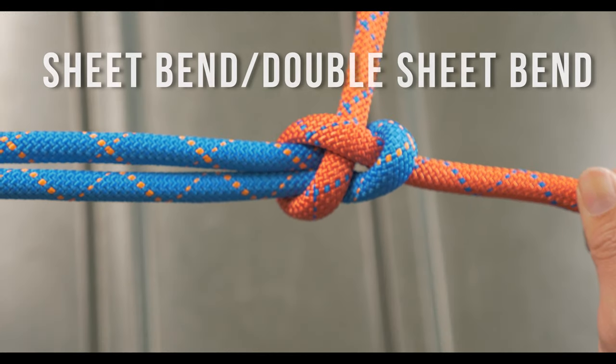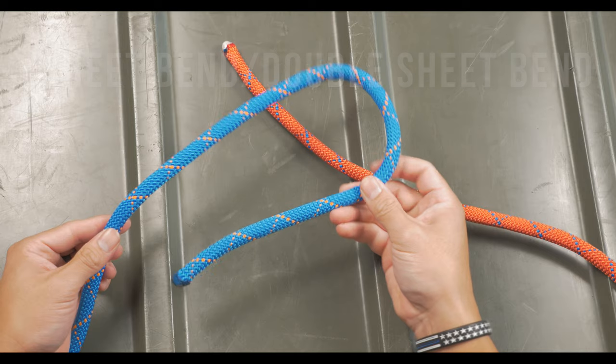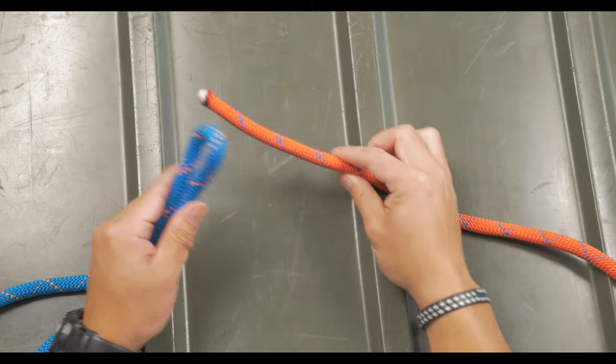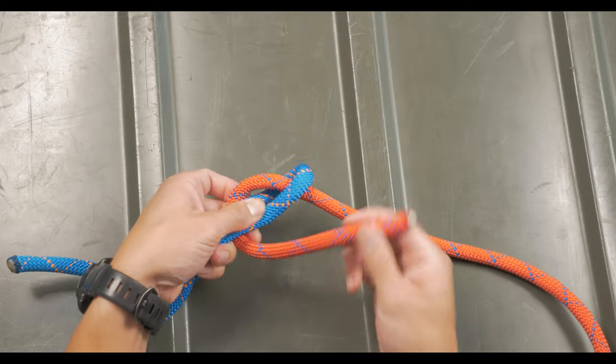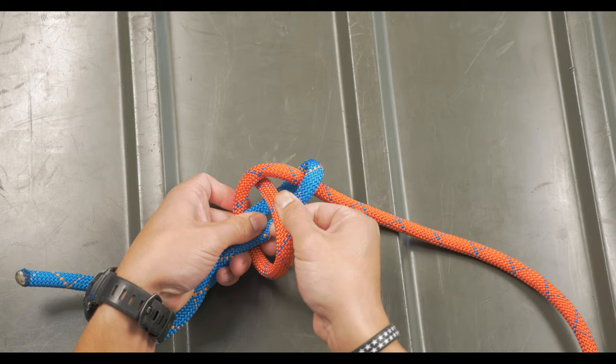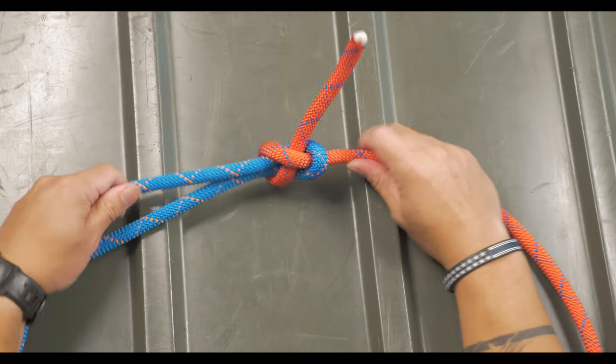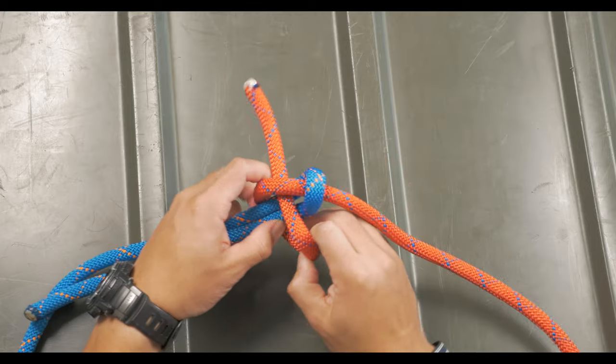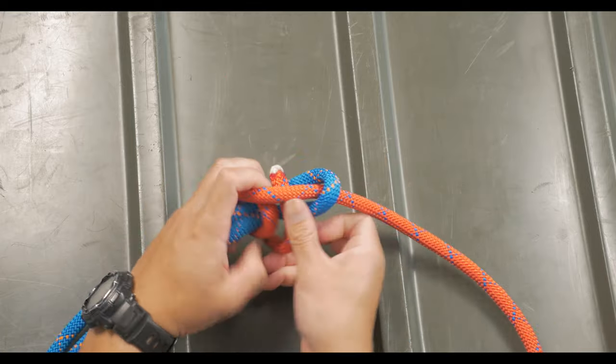The sheet bend is a good knot to tie quickly and it's really easy to untie. It can also be used with two lines of varying diameters. You'll start with the bite into the thicker line and with the working end of the second line, you'll bring it through the eye of the bite. You'll take the working end of the second line, wrap itself around and tuck it underneath itself. To make this more secure, pass the line through itself a second time to turn it into a double sheet bend.